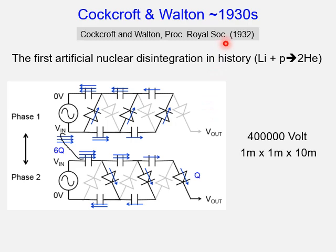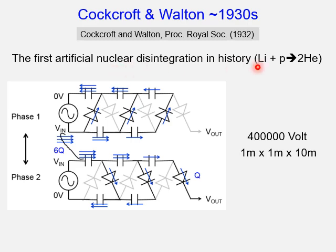Almost 90 years ago, Cockroft and Walton created a facility to generate about 400,000 volts, in a size of 1 square meter by 10 meters in height, to demonstrate the first artificial nuclear disintegration in history.